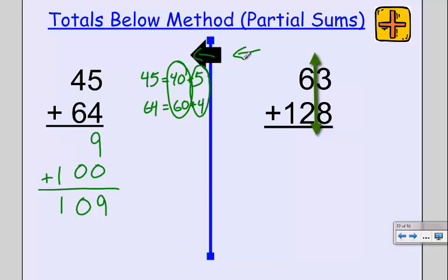We're going to go from right to left, and I need to be able to see numbers inside of numbers. I need to be able to see that 63 is made up of 60 plus 3. I need to be able to see that 128 is made up of 100 plus 20 plus 8.